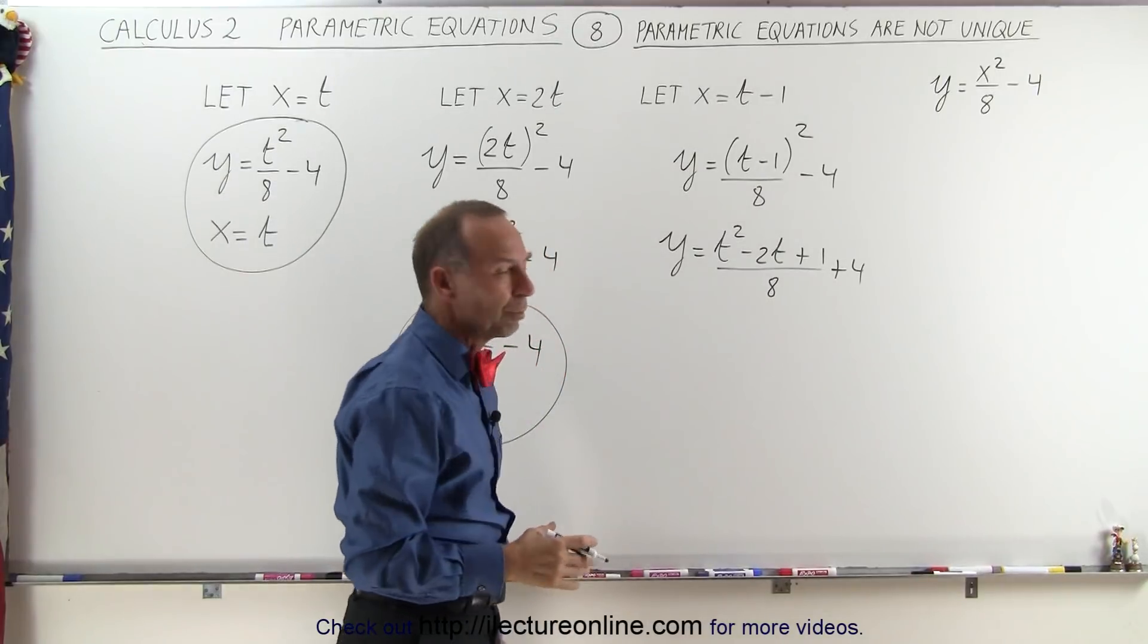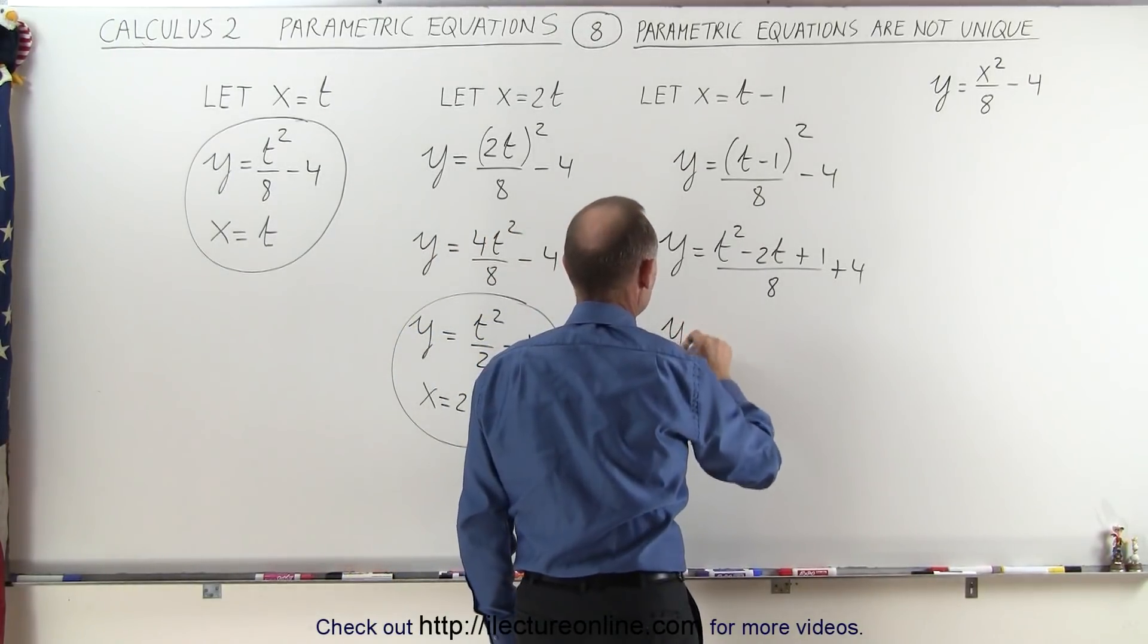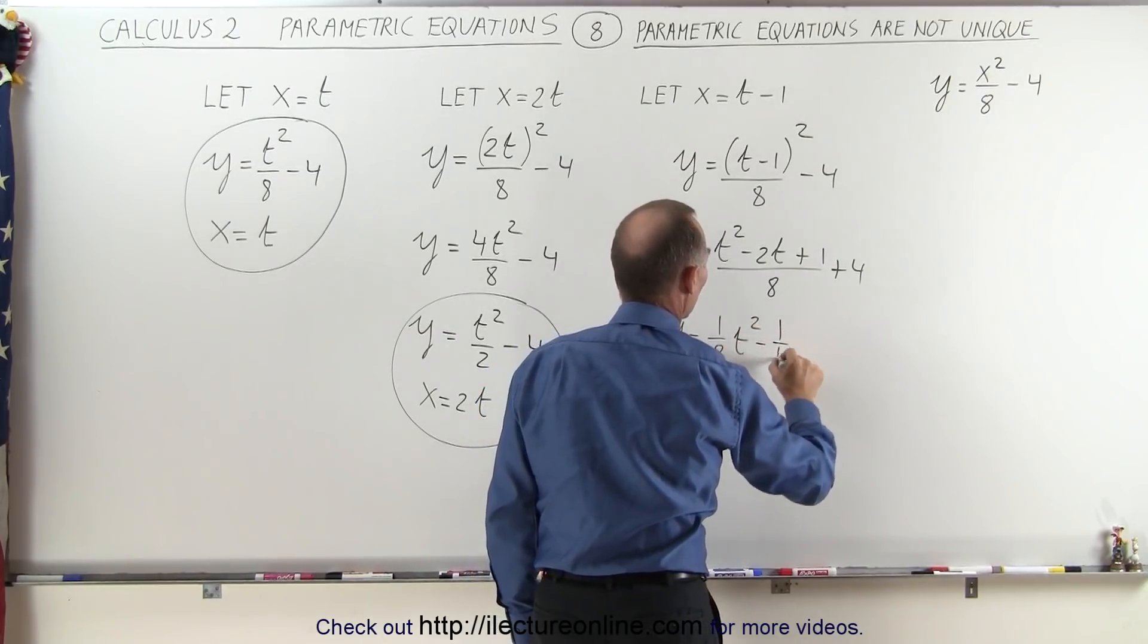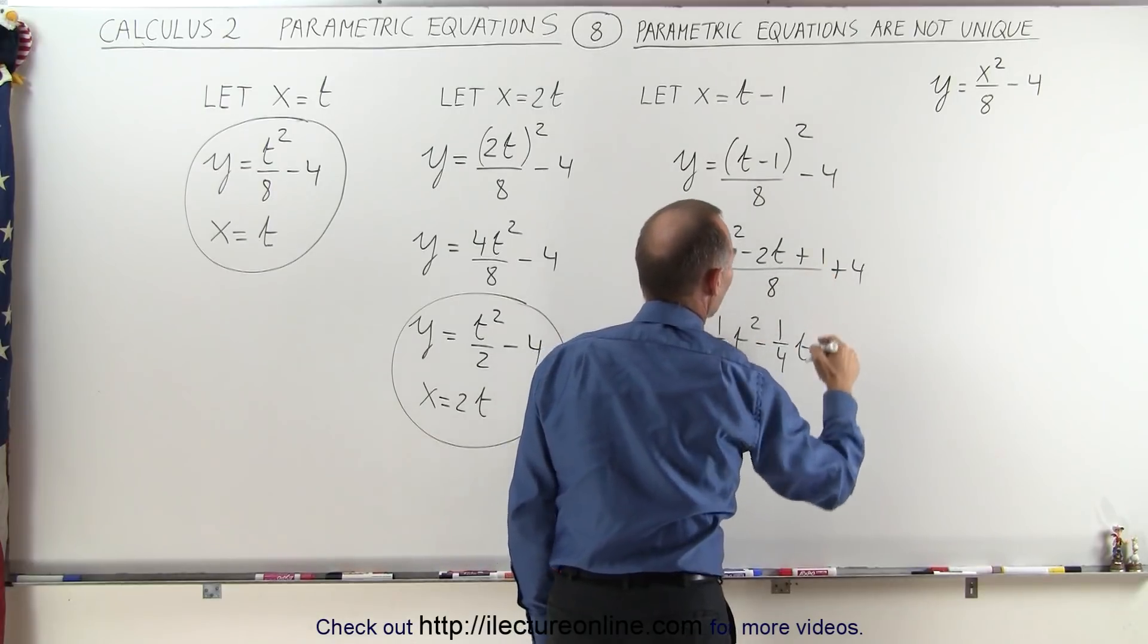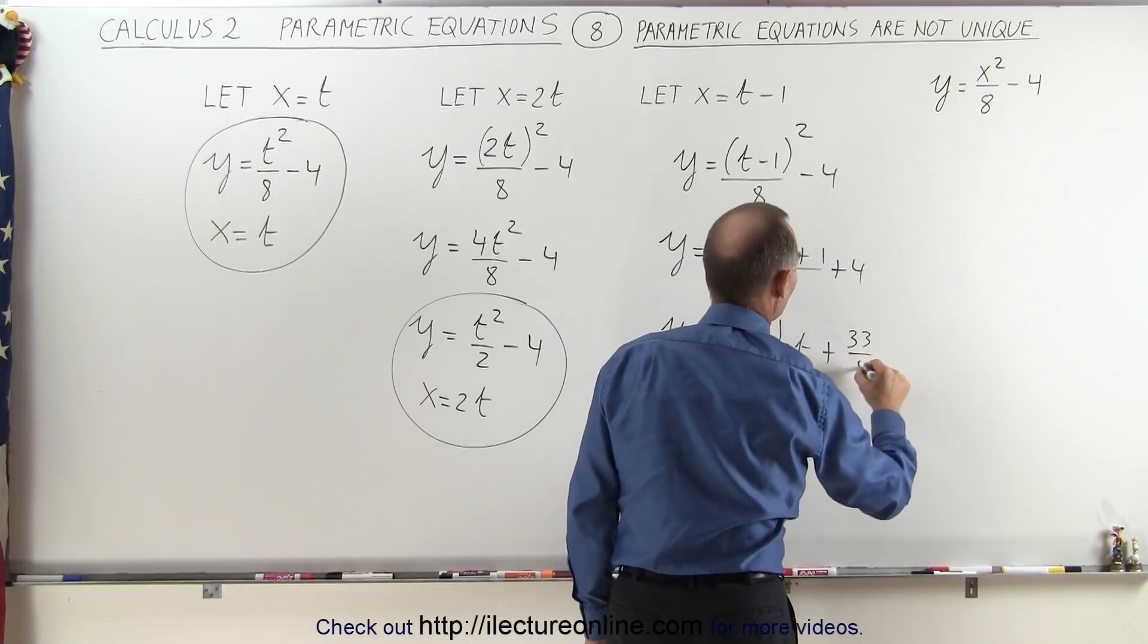We can simplify that even more. We can say y = (1/8)t² - (1/4)t, that would be plus 1/8 minus 4, so that would be plus 33/8.